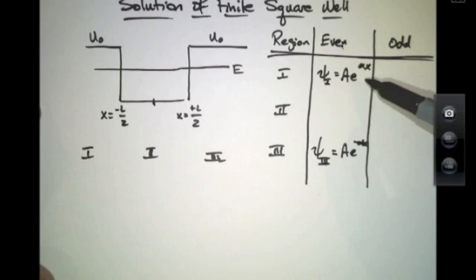Notice I didn't include the other term here, something that looks like e to the minus alpha x up here or e to the plus alpha x here. I want everything to be bounded and stay finite.